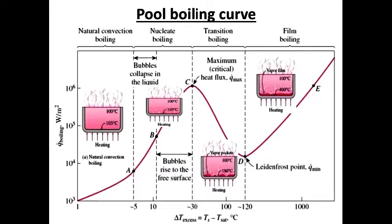Pool boiling is the process in which the heating surface is submerged in a bulk of stagnant liquid. The pool boiling curve is a plot of heat flux versus excess temperature. Excess temperature is the difference between T surface and T saturated of liquid. There are four regimes of pool boiling curve.